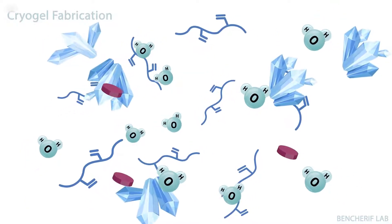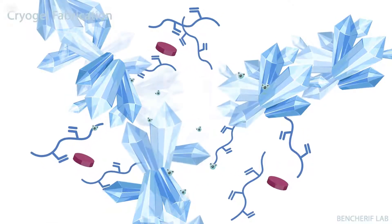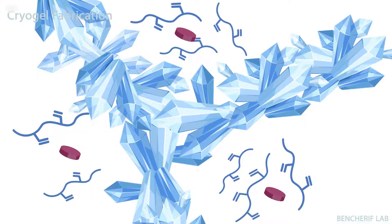This process leads to the nucleation and growth of ice crystals. This results in a phase separation between the ice crystals and solutes, which contain the polymer and initiator.